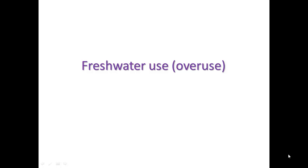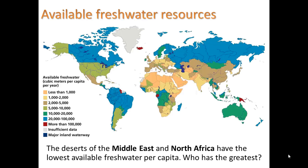Welcome back to part two. Let's take a look at freshwater use, or in our case, overuse. So available freshwater resources — which areas of the world have the least amount of freshwater resources? The desert, of course. So we should be familiar with North Africa and the Middle East — those are the most dry areas.